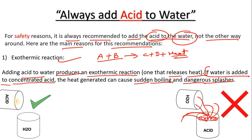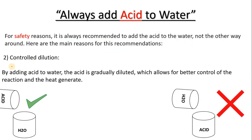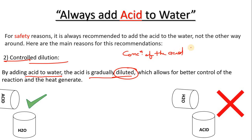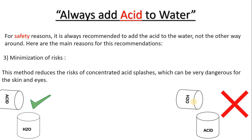The next reason is controlled dilution. When we add acid to water, the acid is gradually diluted — meaning the concentration of the acid will gradually reduce — which allows for better control of the reaction and the heat generated. This is the second reason why we should add acid to water, not water to acid.